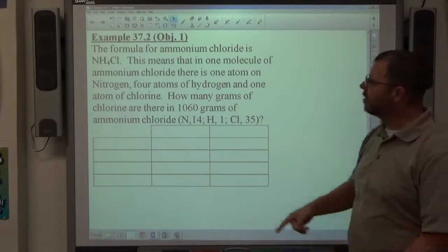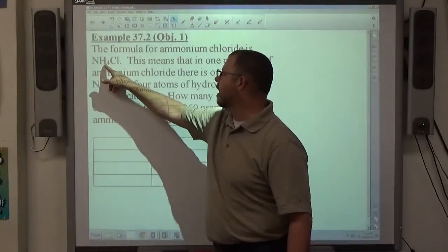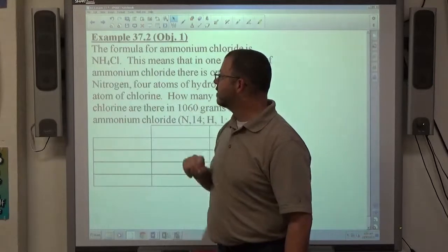This time we've got ammonium chloride, which is N, nitrogen, H4, hydrogen, four atoms of hydrogen, CL is chlorine.